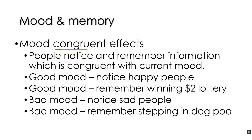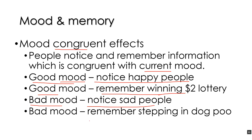And then there are the mood congruent effects, which is when people notice and remember information that is congruent with their current mood. If you're in a good mood, you notice positive things — people who are happy, for example. If you're in a bad mood, you're going to be more likely to notice sad people. If you're in a good mood, you'll remember something positive, like winning two dollars in the lottery. And if you're in a bad mood, you're going to be more likely to remember something negative, such as stepping in dog poo. The mood congruent effect is more to do with how your current mood makes you notice and remember certain things more.